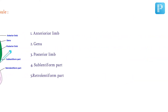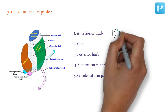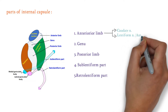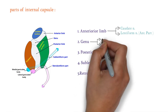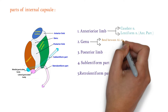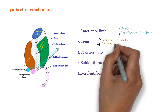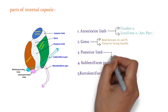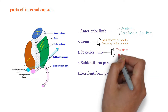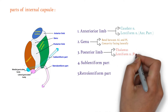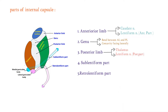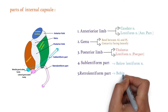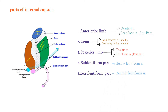The anterior limb is present between the caudate nucleus and the lentiform nucleus — specifically the anterior part of the lentiform nucleus. The genu is the bend between the anterior limb and posterior limb, with its concavity facing laterally. The posterior limb lies between the thalamus and the posterior part of the lentiform nucleus. The sublentiform part is below the lentiform nucleus, while the retrolentiform part is behind it.